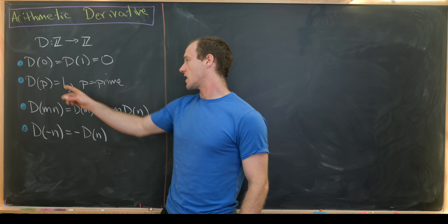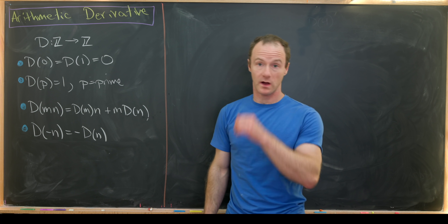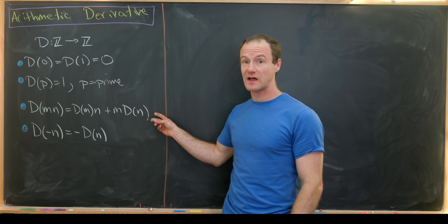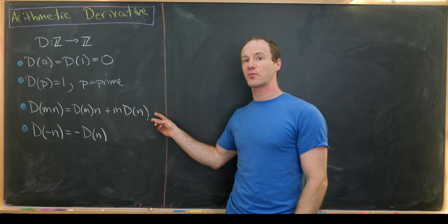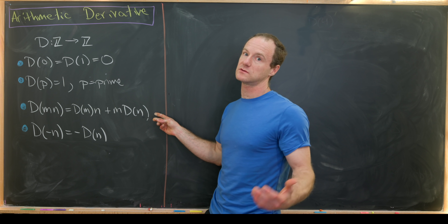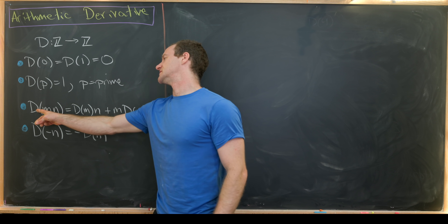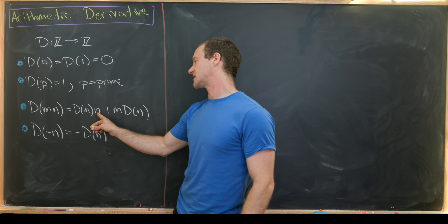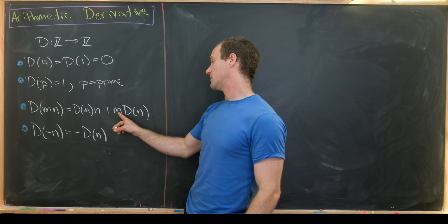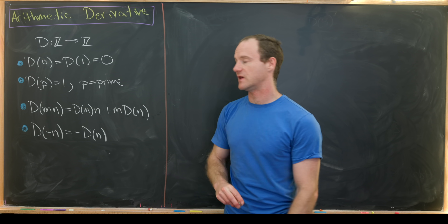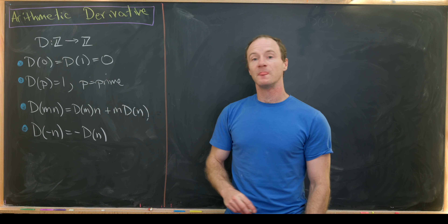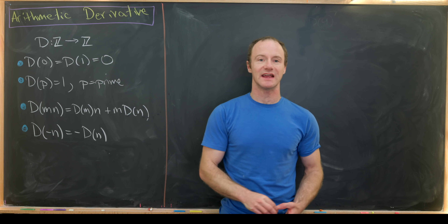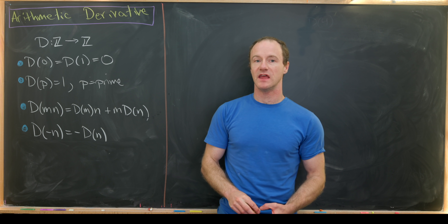Second, d of any prime is equal to 1. Third, d satisfies the Leibniz rule, or product rule from calculus: d of mn equals d(m) times n plus m times d(n). Fourth, d of negative n is equal to negative d of n.